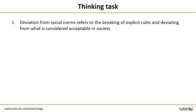Let's go through some answers — you can mark them off as we go through. Deviation from social norms refers to the breaking of explicit rules and deviating from what is considered acceptable in society. This is incorrect — a very tricky one, but due to the word 'explicit' this is false. As we know from earlier sessions, deviation from social norms is about breaking implicit rules.